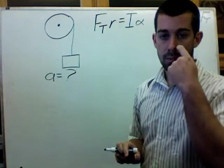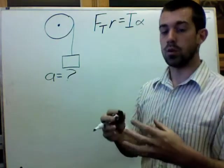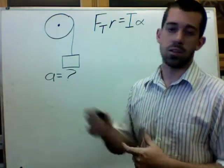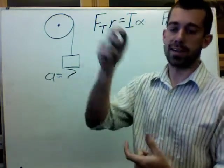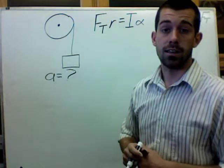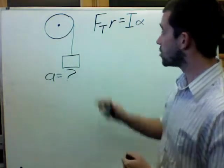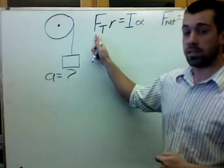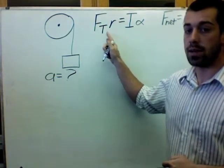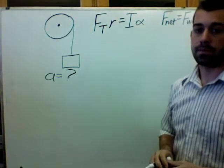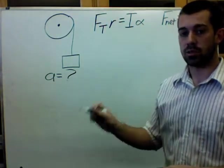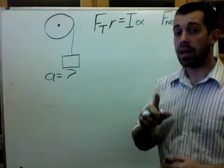The other thing that determines the acceleration is the forces on the pulley and how the pulley spins, because we know that the pulley and the mass have to both be accelerating the same way because they're connected by a rope. You couldn't imagine the pulley spinning really fast and the mass just staying there - that wouldn't work. And so we know from our analysis of the pulley that the force of tension times the radius equals I alpha.